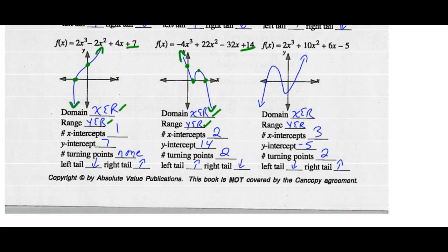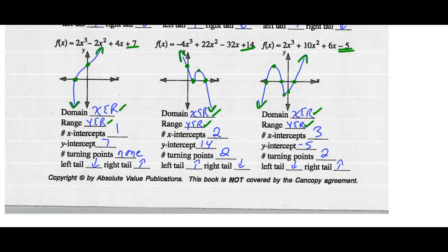For the last graph: domain and range are still any real number. There are now three x-intercepts. The y-intercept is at negative 5. There are two turning points — a relative max and a relative min. The left tail goes down while the right tail goes up.